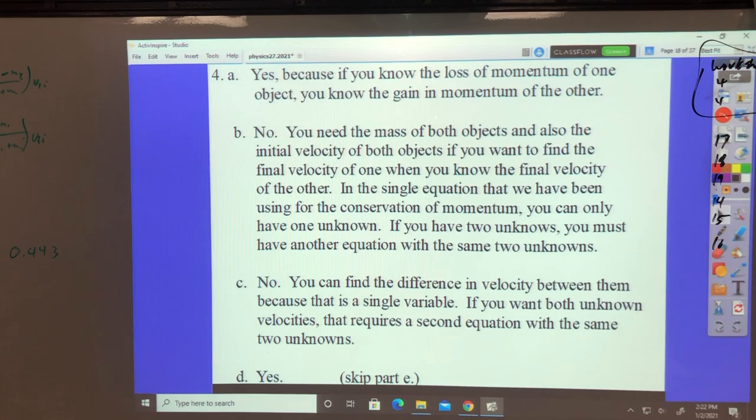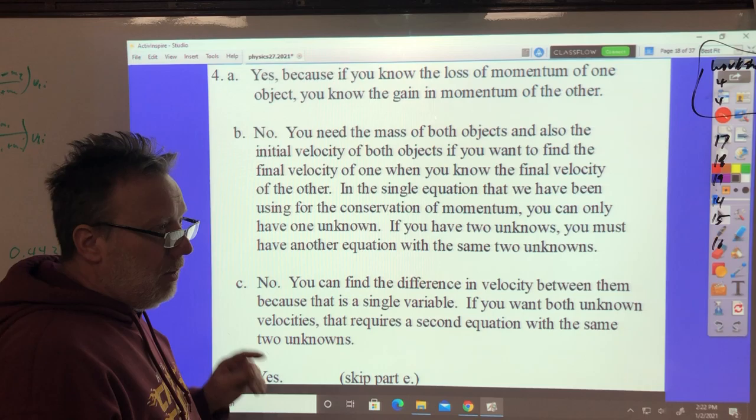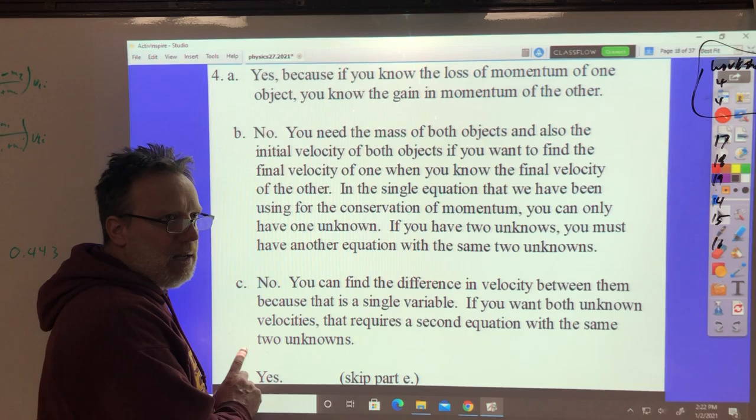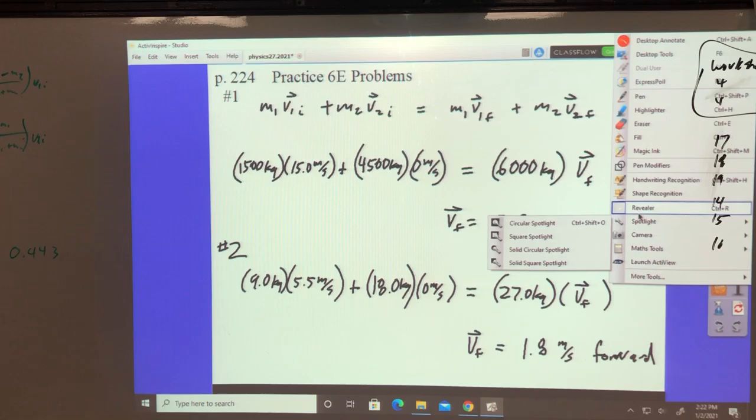Okay. C. If you know the masses of both objects and the final velocities of both objects, do you have enough information to find the initial velocities of both objects? No, that's the same thing in reverse. You'd have to have one of them. Or, have two equations with the same two unknowns. Number four. If you know the masses and initial velocities of both objects and the final velocity of one, do you have enough to find the other one? Yes. As a matter of fact, that's what we're doing in the elastic collision lab coming up. And we're going to skip number E. This is enough to digest right there. If you can explain how I derive those equations in the video, then that'll get you to those questions.